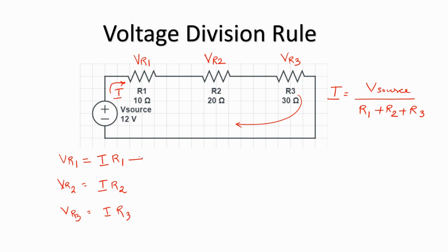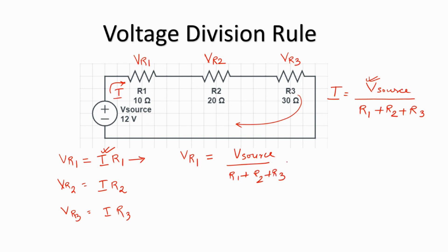Here, in this equation, if I substitute the value of I as V source divided by R1 plus R2 plus R3, I get Vr1 equal to V source divided by R1 plus R2 plus R3, into R1.